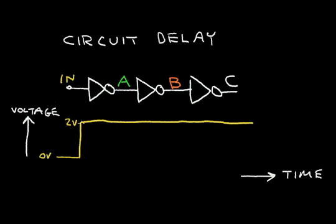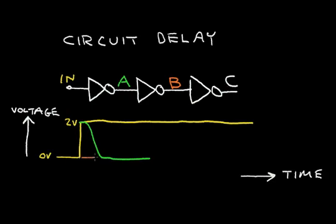Let's analyze what happens at node A. As the input of the first inverter switches high, the A signal will transition to a 0 level and stay low. When the A signal switches, the B signal switches to a high level — starting low then switching to a logic 1. That allows signal C to change from a 1 level and transition to a 0 level and stay there. We see that the first inverter has a certain delay, the second inverter has its delay, and the final inverter has its delay.